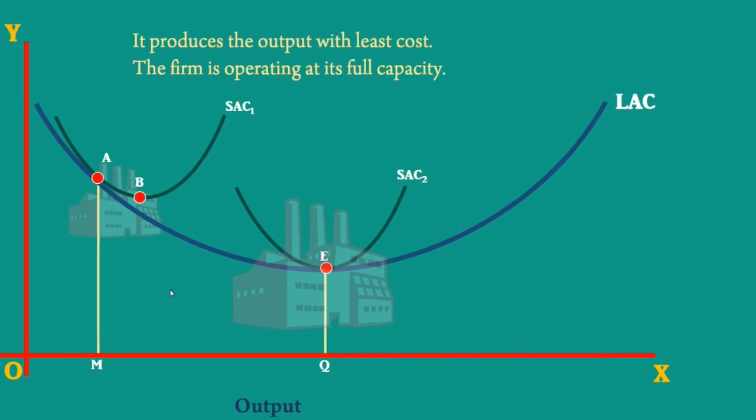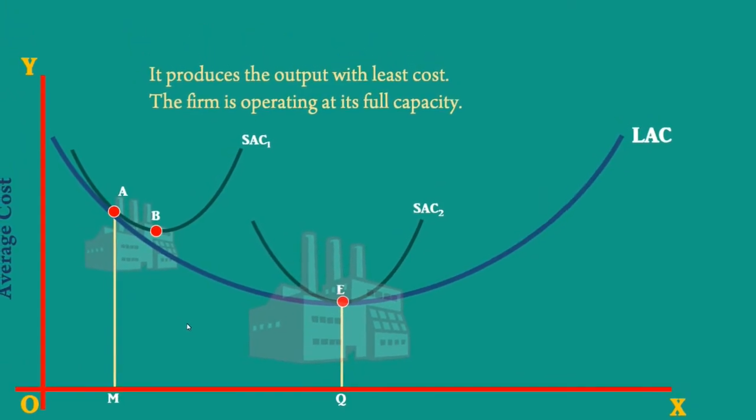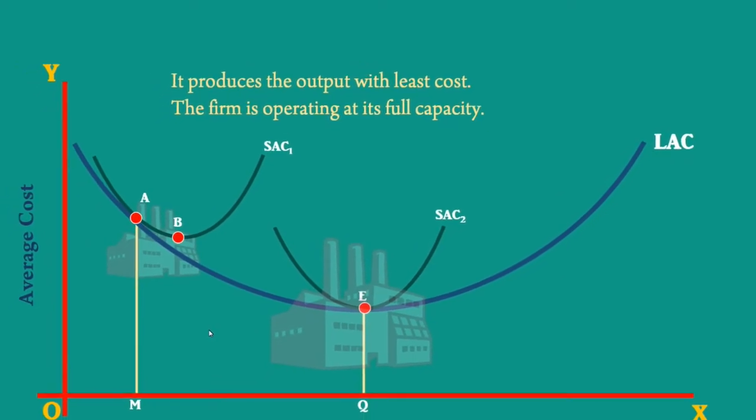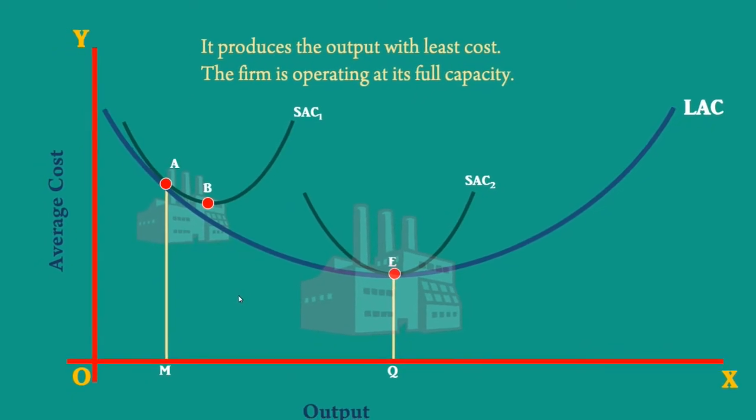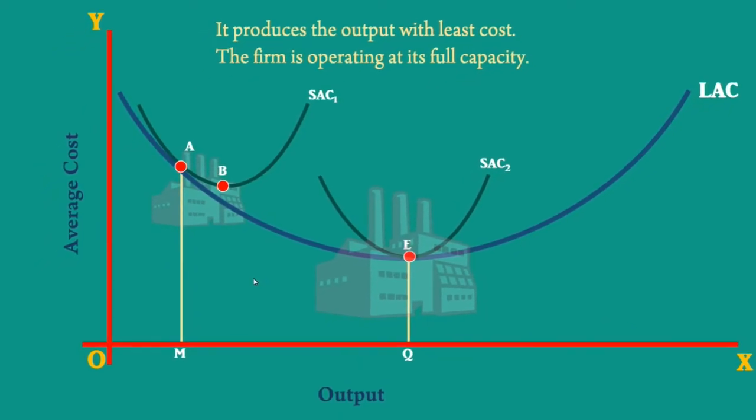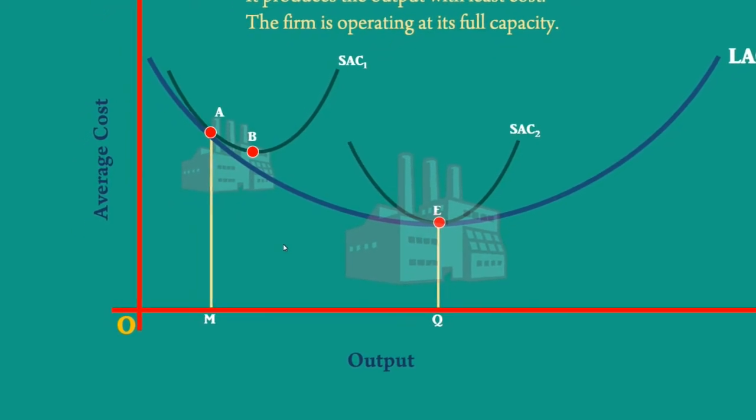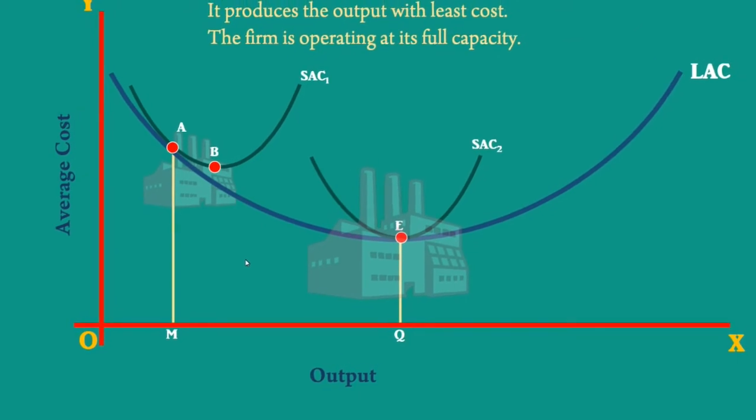Moreover, this firm is not enjoying the economies of scale fully. There is scope for increasing its internal economies by moving down along the Long Run Average Cost Curve. Hence, no plant on this side of Long Run Average Cost Curve can be an optimum plant.